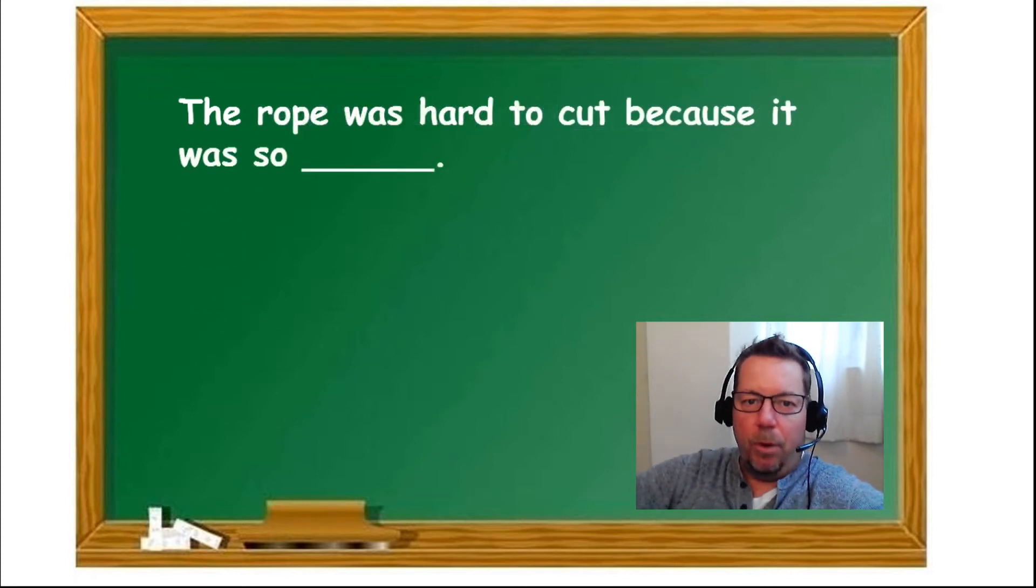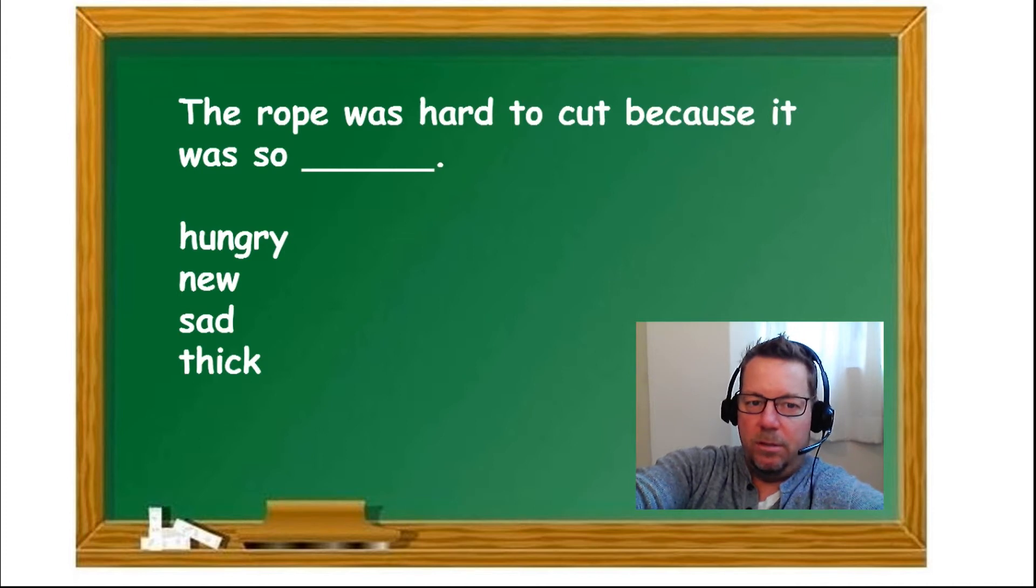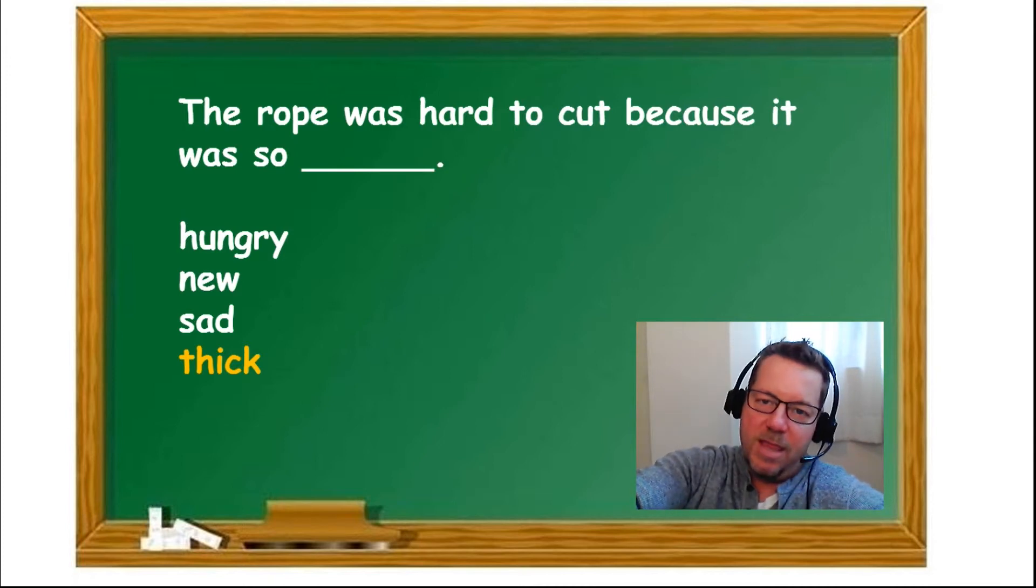The rope was hard to cut because it was so... hungry, new, sad, or thick? This should be obvious. Only one really fits. The rope was hard to cut because it was so thick. Thick. Not thin. Thick.